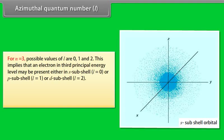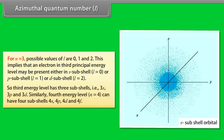For N equals 3, possible values of L are 0, 1, and 2 — an electron may be in the S subshell (L=0), P subshell (L=1), or D subshell (L=2), so the third energy level has three subshells: 3S, 3P, and 3D. Similarly, the fourth energy level (N=4) can have four subshells: 4S, 4P, 4D, and 4F.